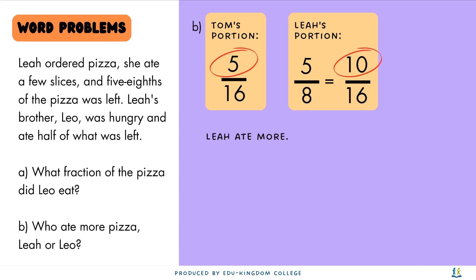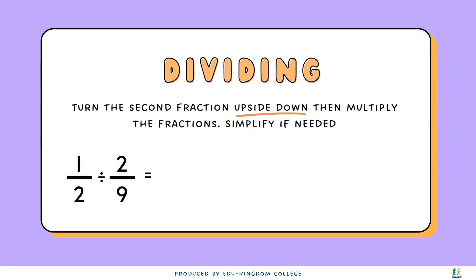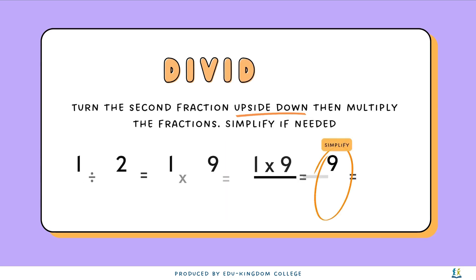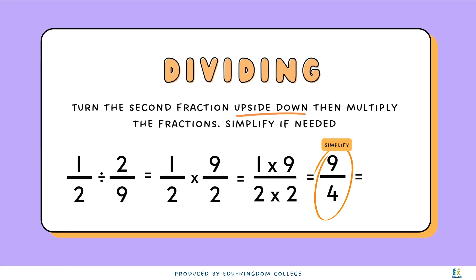Now let's have a look at dividing fractions. To divide, we turn the second fraction upside down and then multiply and simplify if needed. For example: 1 over 2 divided by 2 over 9. We flip the second fraction to get 1 over 2 times 9 over 2. Multiplying numerators by numerators and denominators by denominators gives us 9 over 4. Since 9 over 4 is an improper fraction, we convert it to the mixed fraction 2 and 1 over 4.